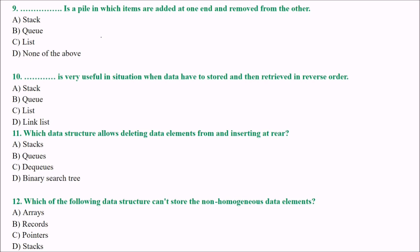Next: a data structure in which items are added at one end and removed from another is which abstract data type? The answer is Queue. Question 9's answer is B.